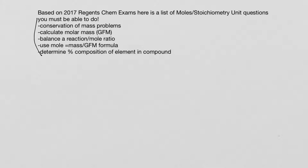Using, of course, moles equals mass divided by gram formula mass, and determining the percent composition of an element in a compound. For example, the percent of oxygen in something like potassium nitrate.